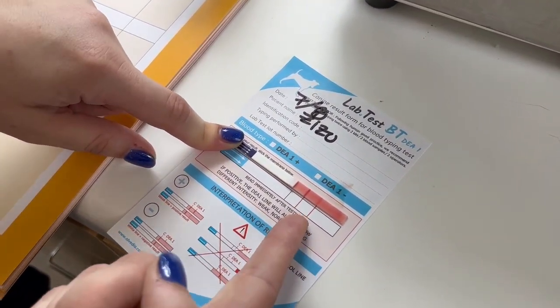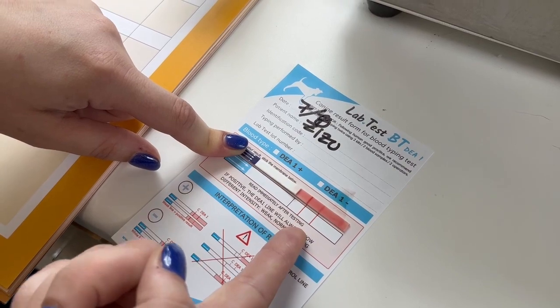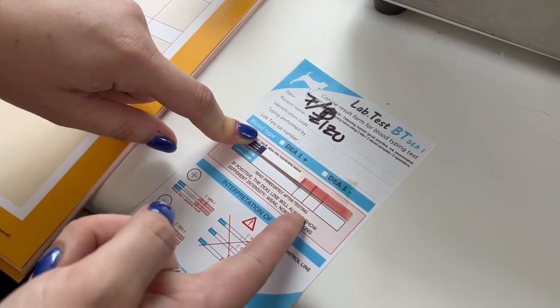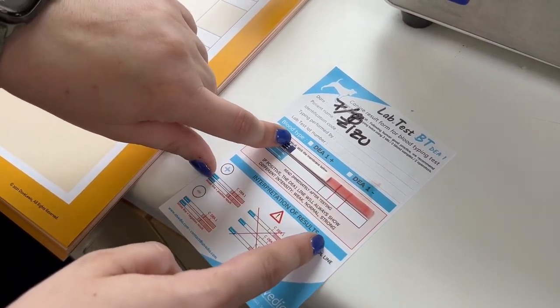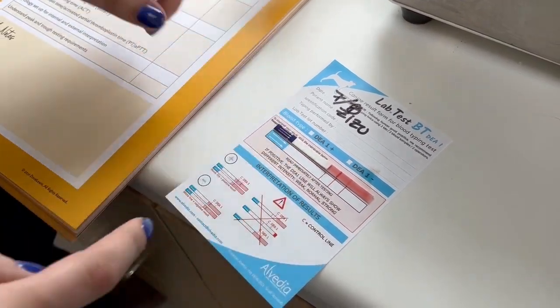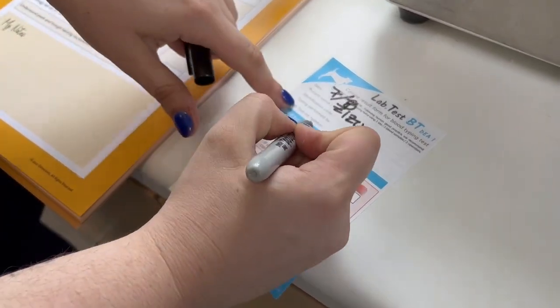If this line is present, the second line, that means it is a DEA1 positive dog. If that line was not there, it would be a DEA1 negative dog. The control line is always going to be there, so we can just go ahead and mark that this dog was positive.